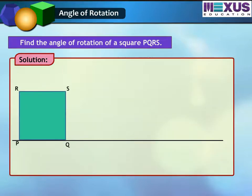PQRS is a square. Let us assume that the center of rotation is Q and rotate the square to 60 degrees, and we get the following figure which is not the same as we took earlier.